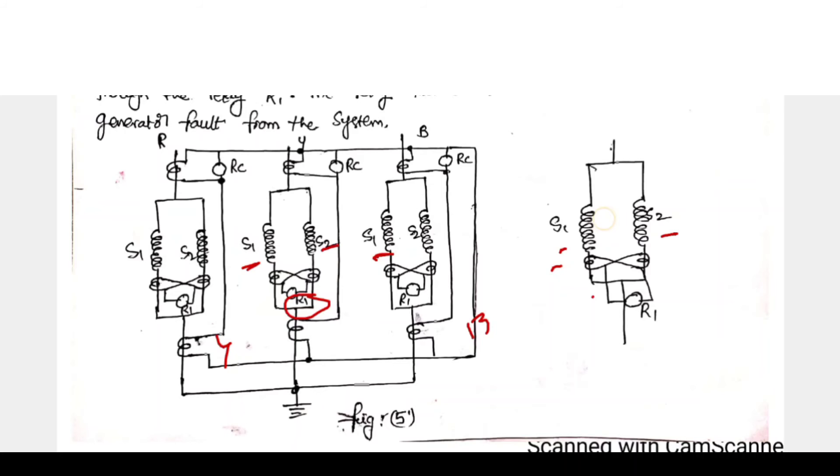If a short circuit develops between adjacent turns, say S1, if a short circuit appears in adjacent turns in between S1, the currents in the stator winding S1 and S2 are not equal. Because due to this short, this fault, what will happen, high current will flow.